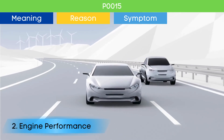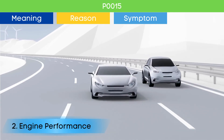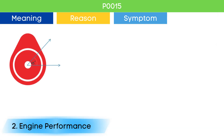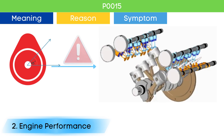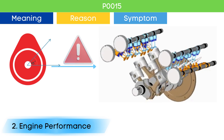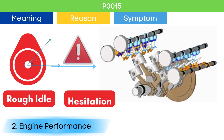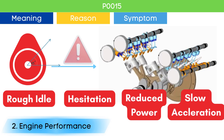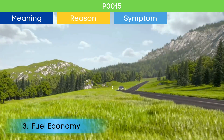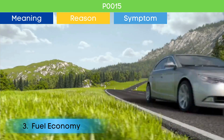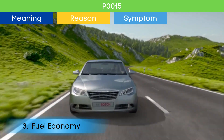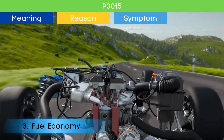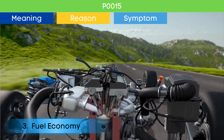Symptom number two: poor engine performance. Problems in the cam position actuator circuit can lead to incorrect cylinder valves opening and closing. This can manifest as rough idle, hesitation, reduced power, and sluggish acceleration. Symptom number three: decreased fuel efficiency. Wrong valve opening and closing due to P0015 leads to incomplete combustion of fuel, which results in poor fuel economy.